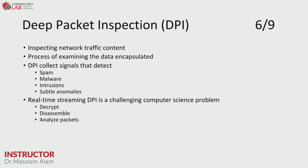Deep packet inspection (DPI) provides a more detailed view of packet content. A disadvantage of DPI is that it cannot perform inspection on encrypted traffic. DPI involves examining the data encapsulated within packets to detect spam, malware, intrusions, or other anomalies in the network. The challenging part of DPI is the decryption and de-assembly process, which must then be performed at very high speed.